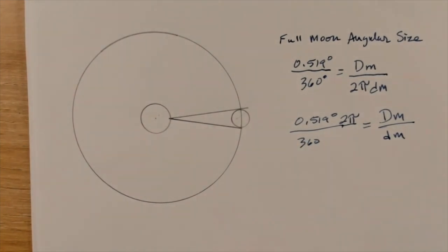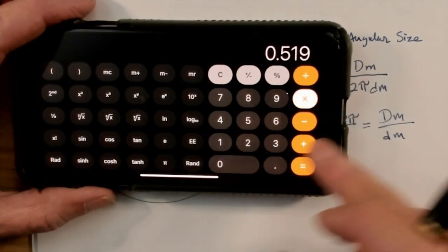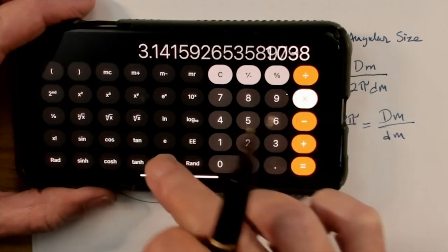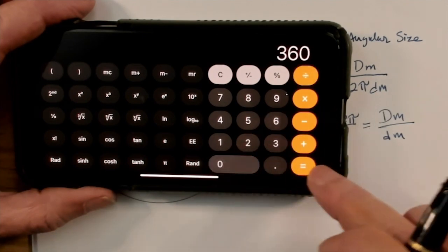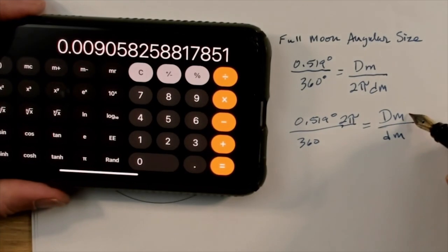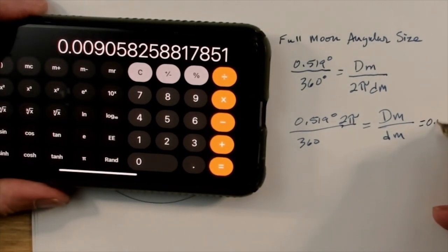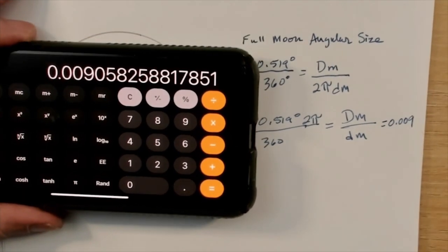Now, if we go ahead and work this out on the calculator, 0.519 times 2 times π, divided by 360, equals 0.009. So, the diameter of the moon compared to the distance from the earth to the moon equals 0.009. Just like that.